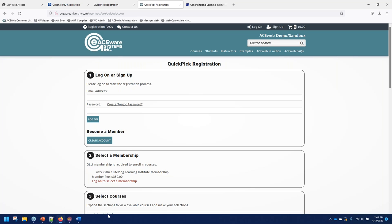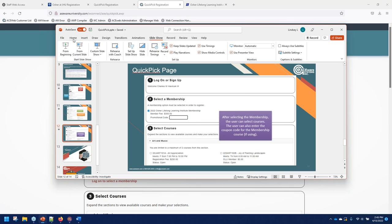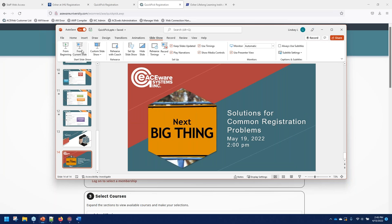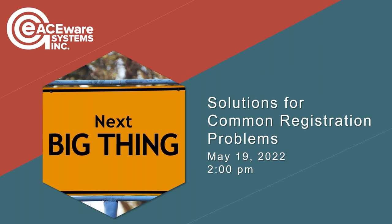Lindsay, do we have the next webinar? We do — our May webinar is on the 19th, and we're going to be covering some of the solutions to some of the common registration problems that we see. And with that, hopefully we'll see some of your colleagues next week at our new user spring training, and then we'll see some of you in May for this webinar, and hopefully we will see all of you in June at conference. Registration is open — you want to get that registration in as soon as possible. We will thank Lindsay for putting this together and telling us everything about Quick Pick, and we will see you soon at another ACE4 event. Thanks for joining us, everyone. Have a great afternoon.